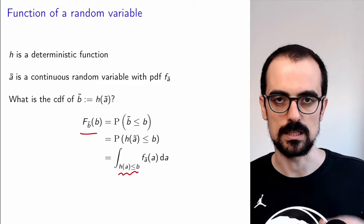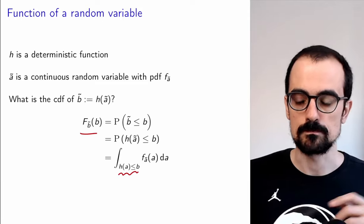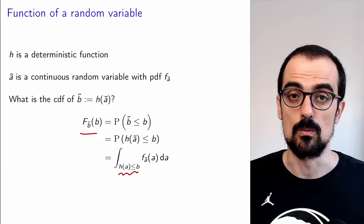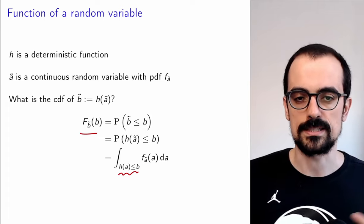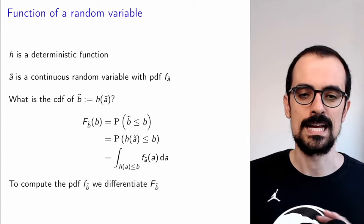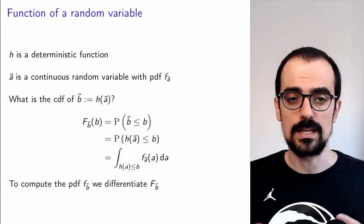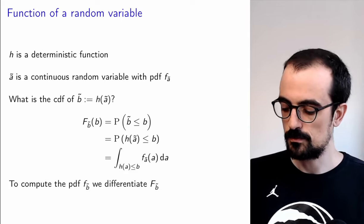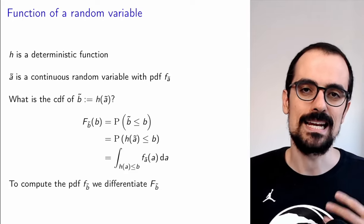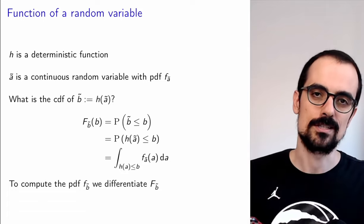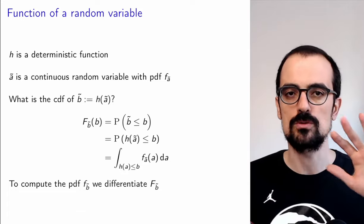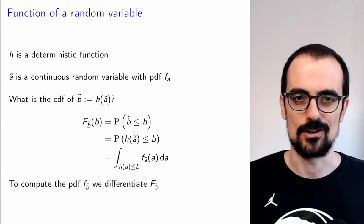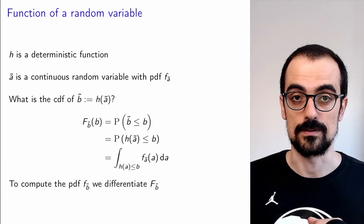We're going to see some concrete examples in a moment, but this is how we do it. Now, how do we compute the PDF of B if that's what we really want? We just take the derivative of the CDF — as simple as that. There are some formulas that will give you the PDF of B from the PDF of A, and they can be proved in exactly this way. I like to go systematically first through the CDF and then differentiate, because those formulas might or might not hold depending on the properties of the deterministic function.